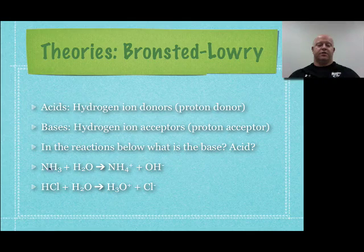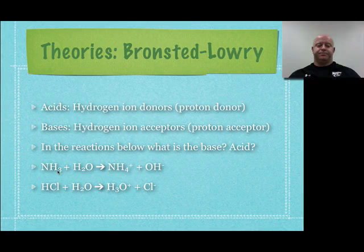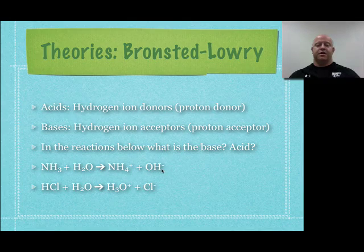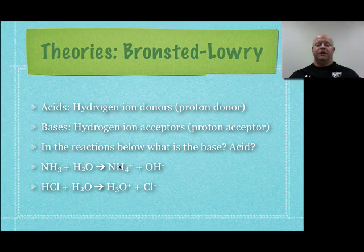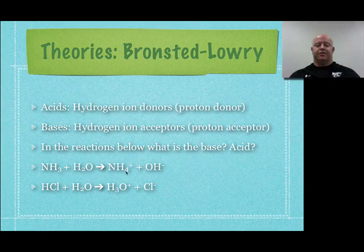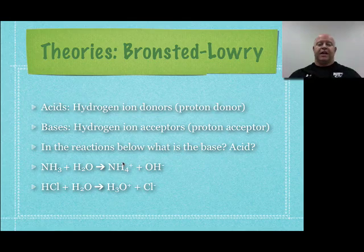Let's look at a couple of reactions and identify which things are acids and which are bases. We have NH3 reacting with water to make NH4+ and OH⁻. NH3 goes from NH3 to NH4+. Did it accept a hydrogen ion to get there, or did it donate one? It accepted one — we have three hydrogens here and four hydrogens with a positive charge there. So it gained a hydrogen ion; it's an acceptor. We would call NH3, which is ammonia, a base.